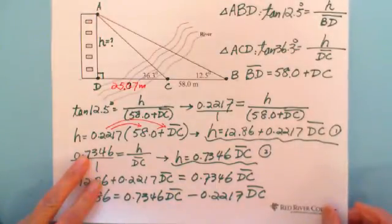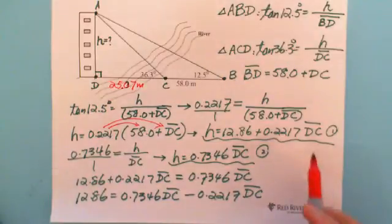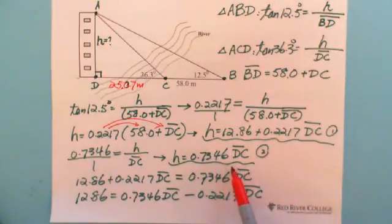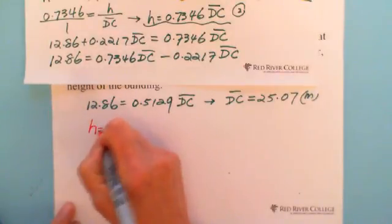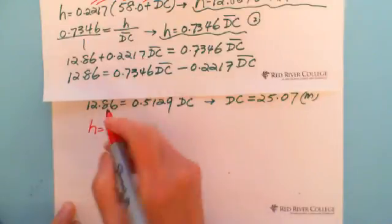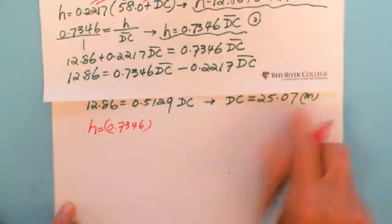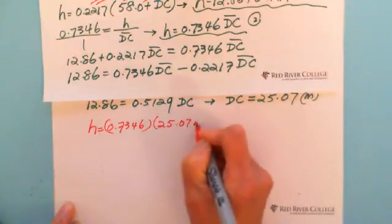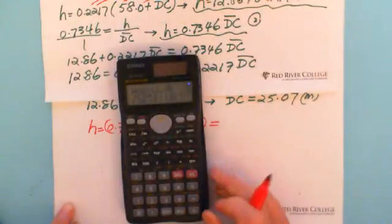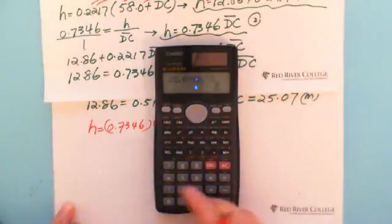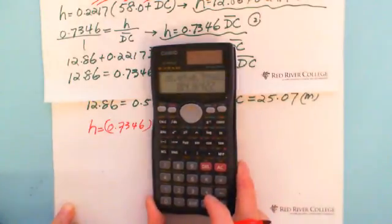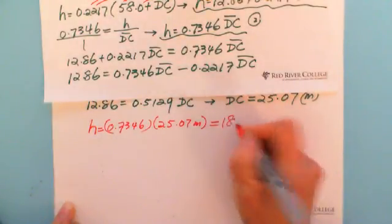And then we can use this information to plug into the second equation or first equation, it doesn't matter. If you use the first equation, you will do one more step. If you use the second equation, you just multiply 0.7346 to get the H. Whatever you use, which one, all working. So finally we got H equals 0.7346 multiplied by DC, which is 25.07 meters. This gives us 25.07 multiplied by 0.7346. We got 18.42 meters.